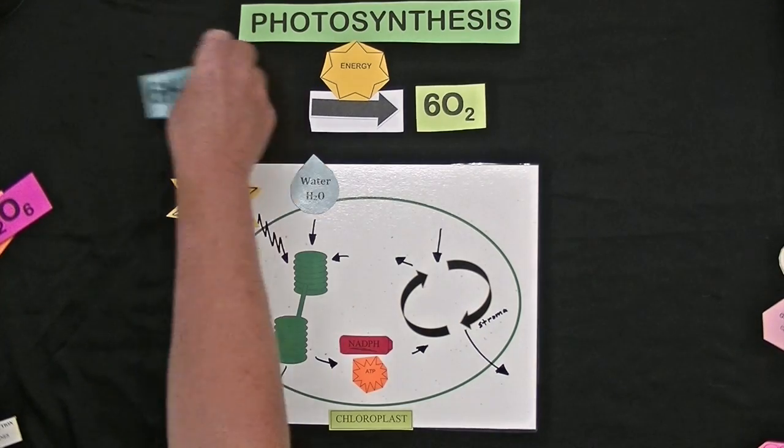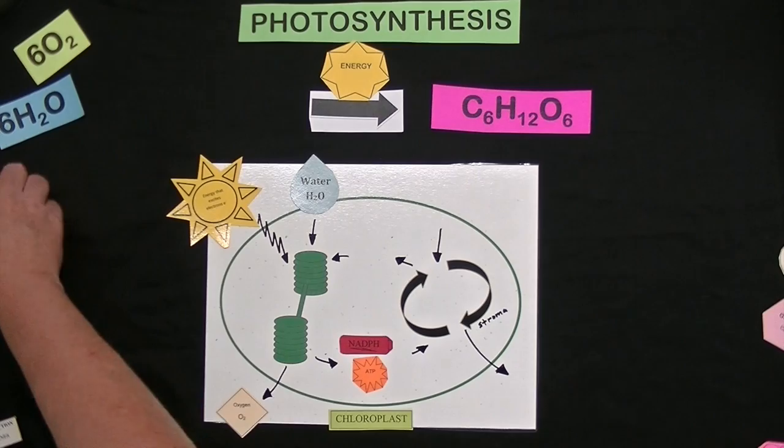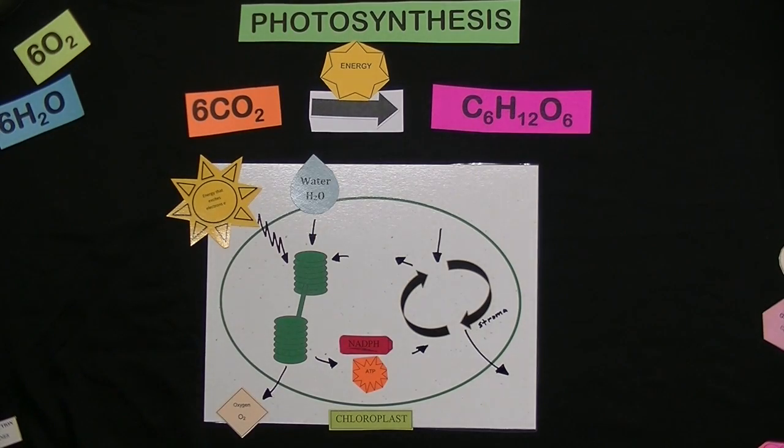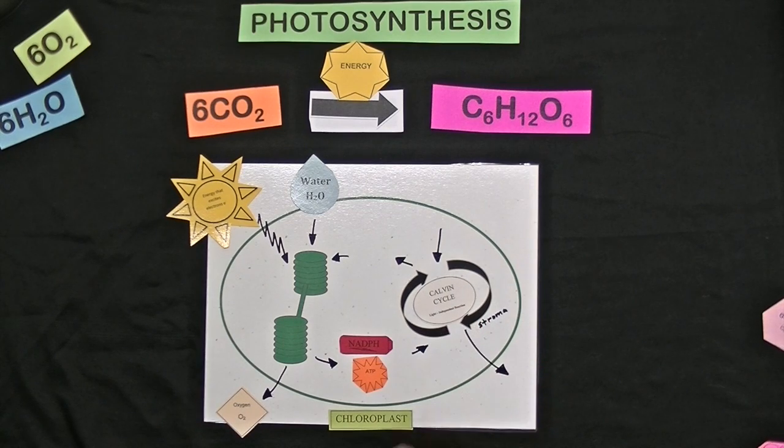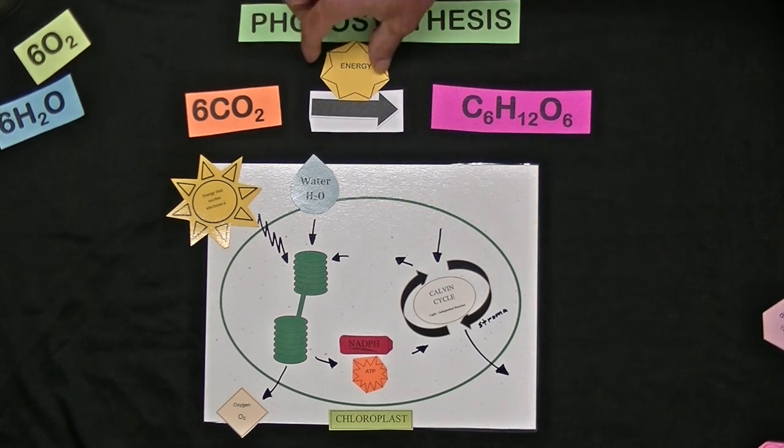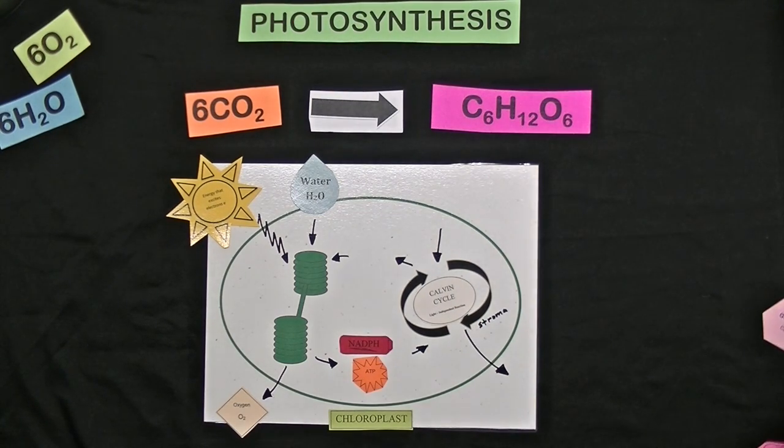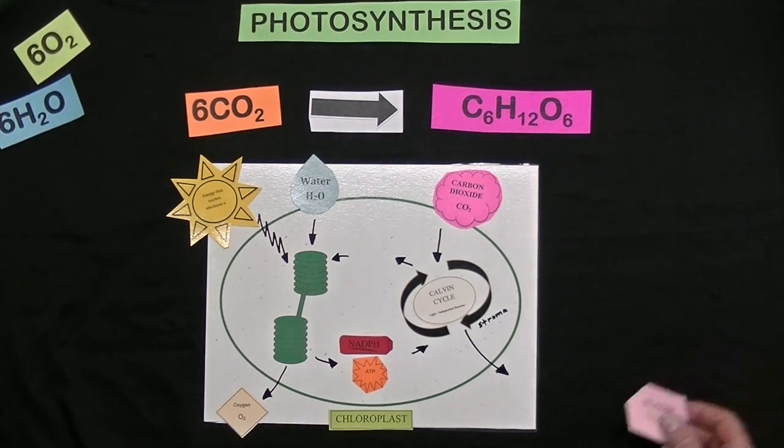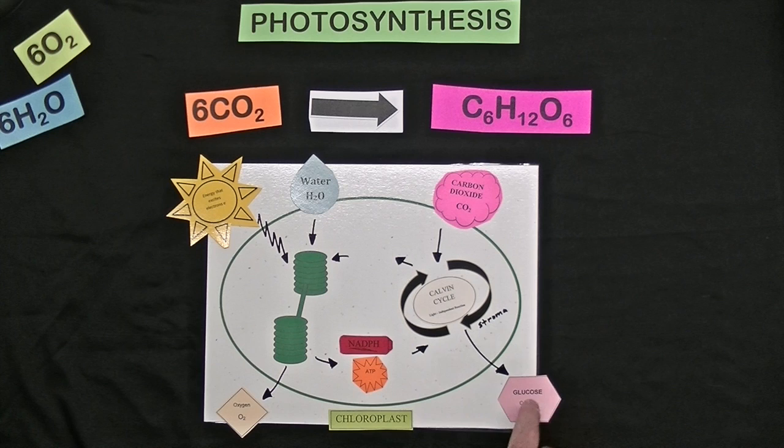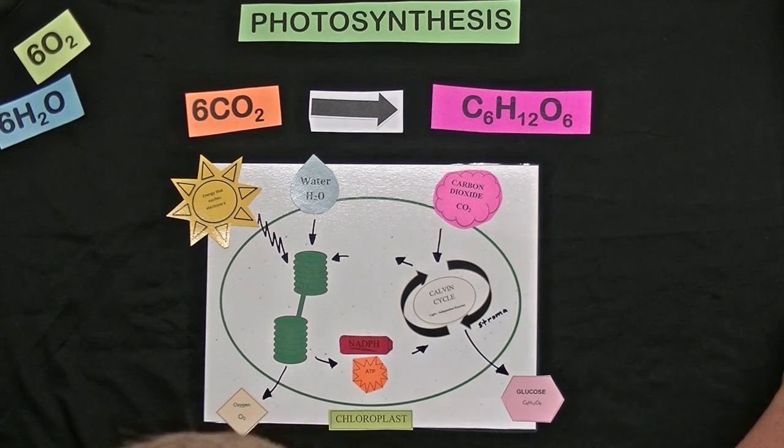The next reaction is called the light-independent reaction or the Calvin cycle. It occurs in the stroma and this is where carbon dioxide actually gets fixed into a compound that eventually becomes glucose which is food for the plant.